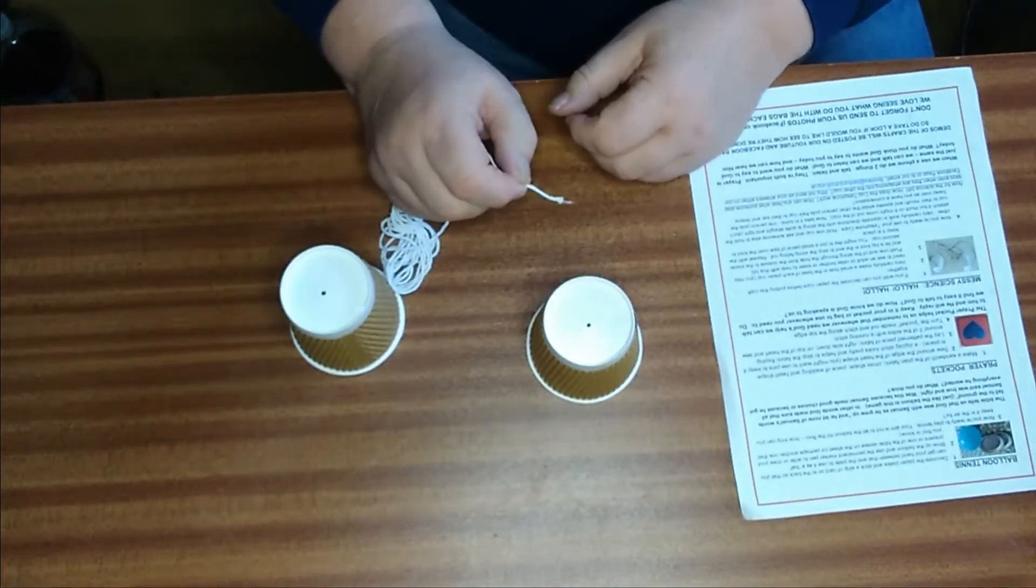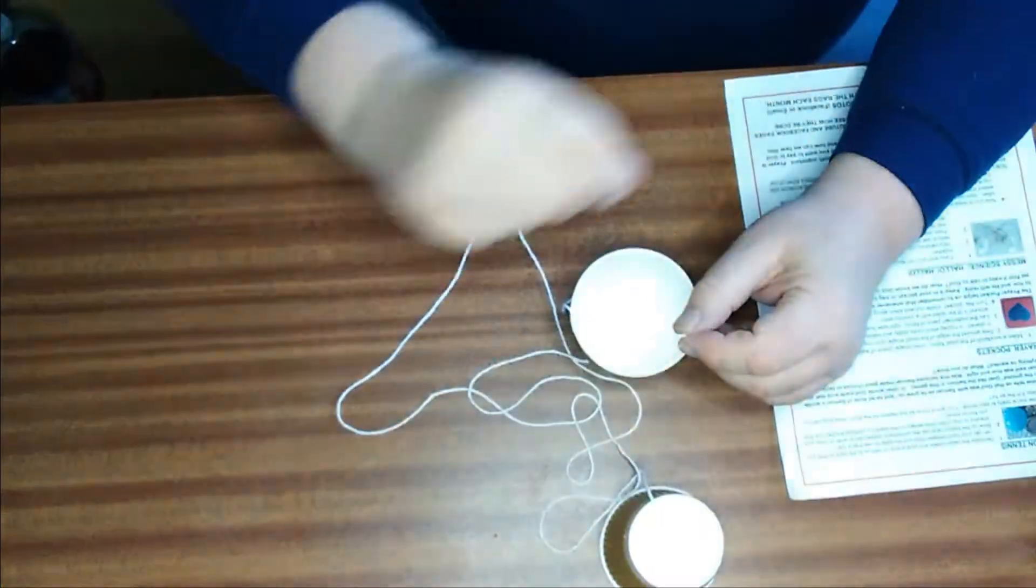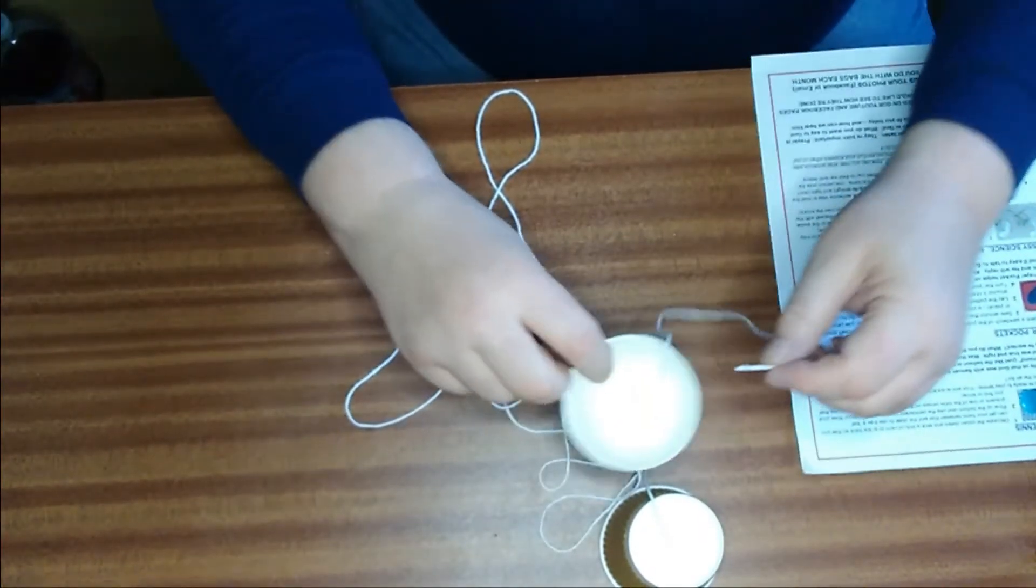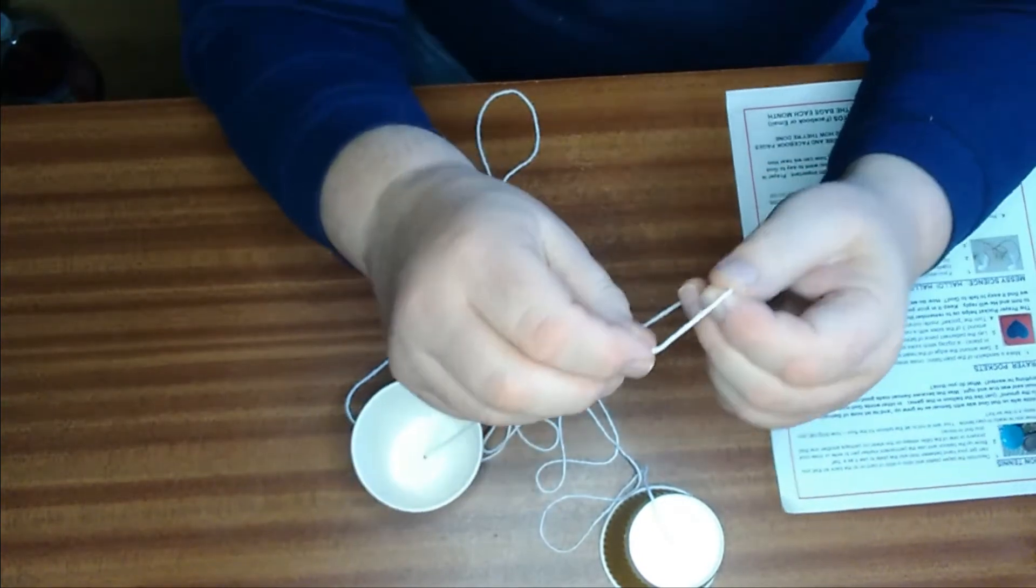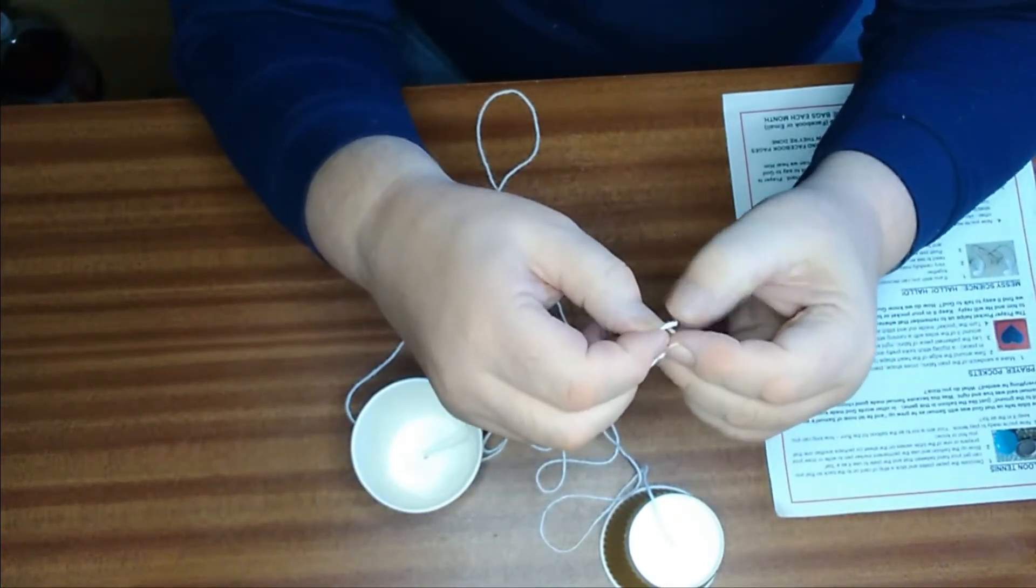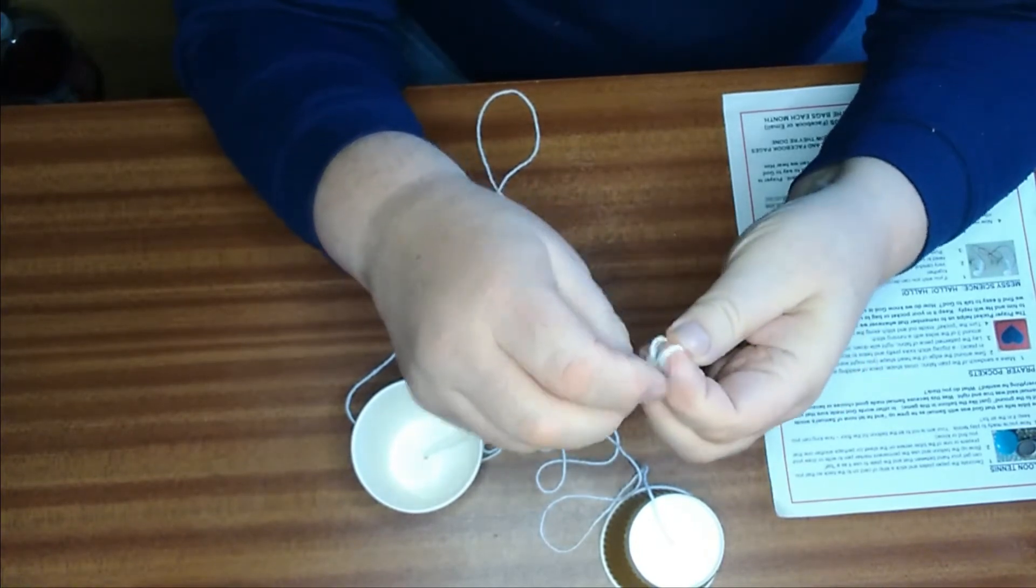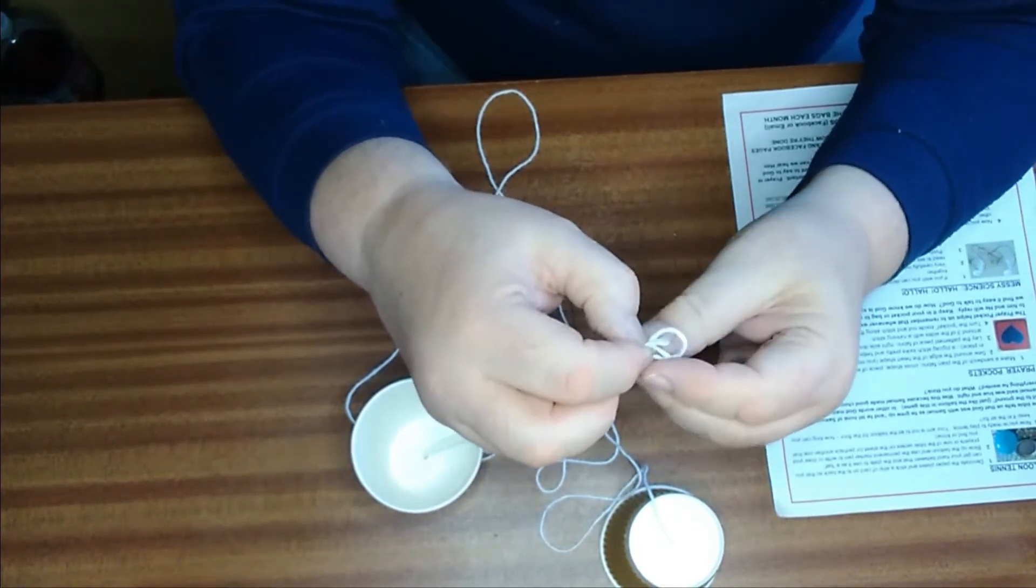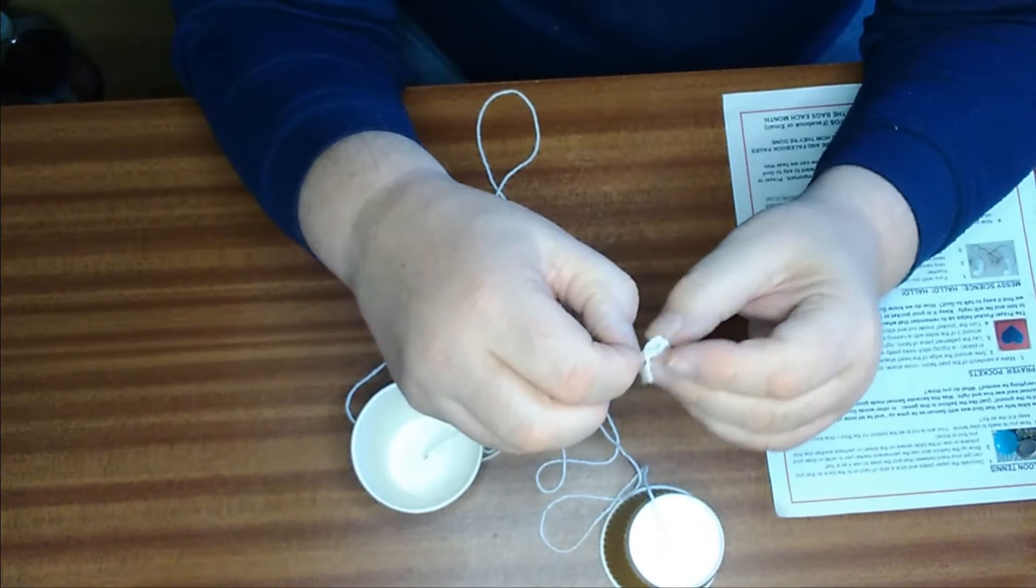Put your string through the hole and then tie a knot in the end. I did two or three knots so it'd be bigger than the hole. Do this for both cups.